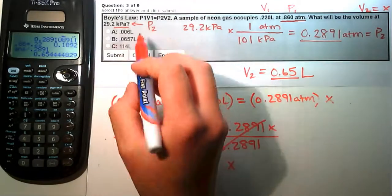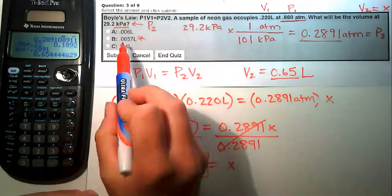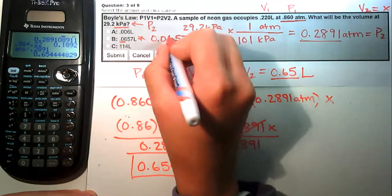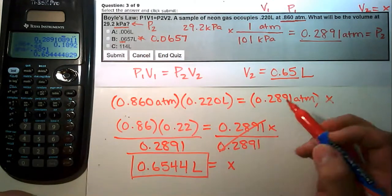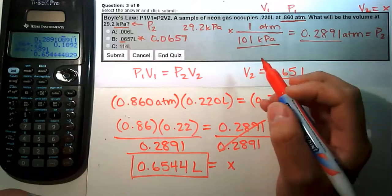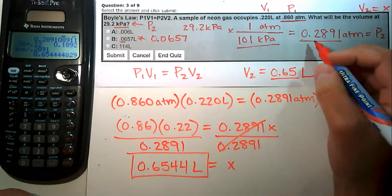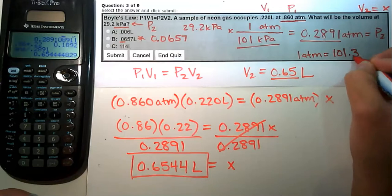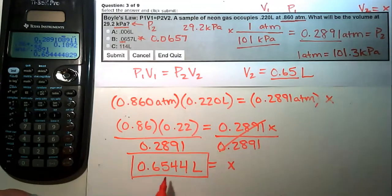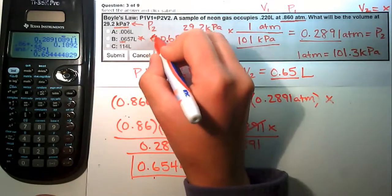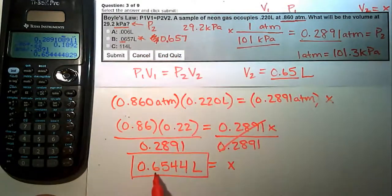The slight difference between our answer of 0.654 and the expected 0.657 is likely due to rounding in the kilopascals-to-ATM conversion. The conversion 1 ATM equals 101 kilopascals is actually closer to 101.3 kilopascals, which accounts for the small discrepancy. Regardless, 0.657 is very close to 0.654, confirming that letter B is indeed the correct answer.